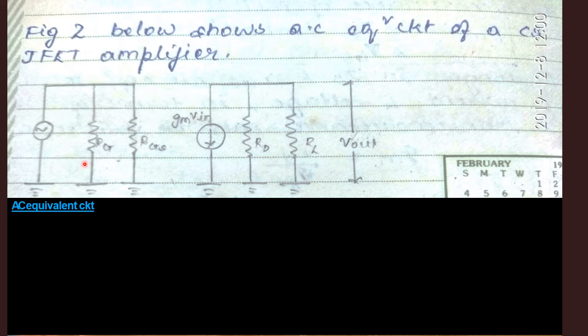AC equivalent circuits are shown. The gate resistance RG is in parallel with the gate source resistance RGS. This is the input circuit and this can be said as the output circuit. RG is parallel to RGS. This is the input.